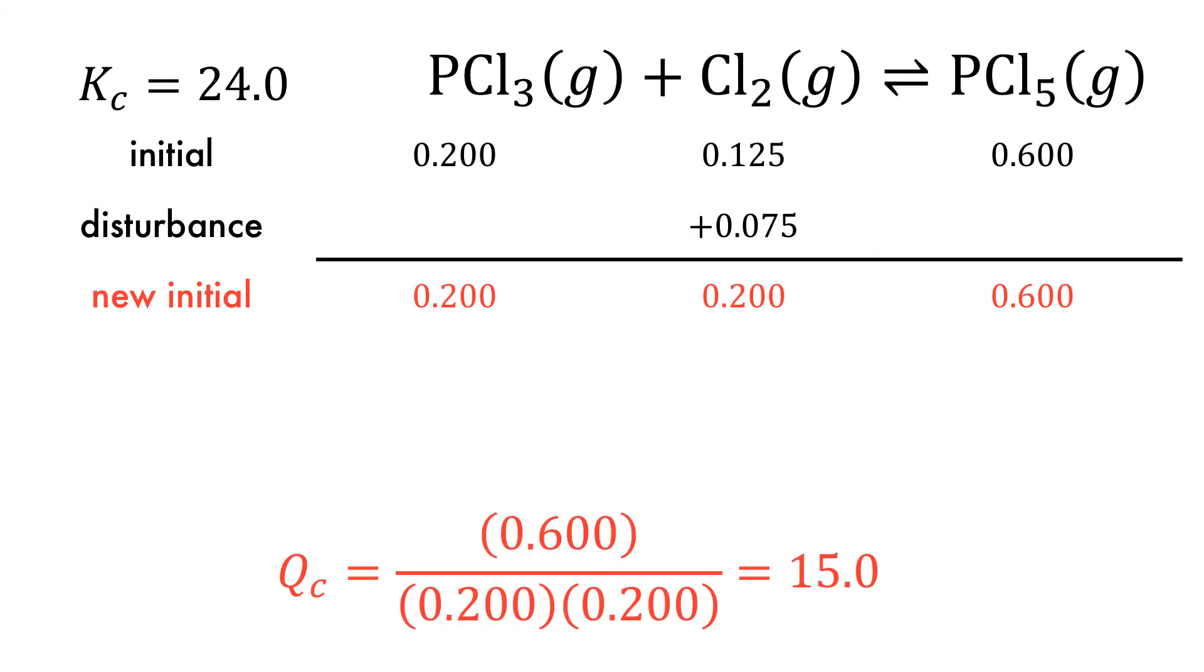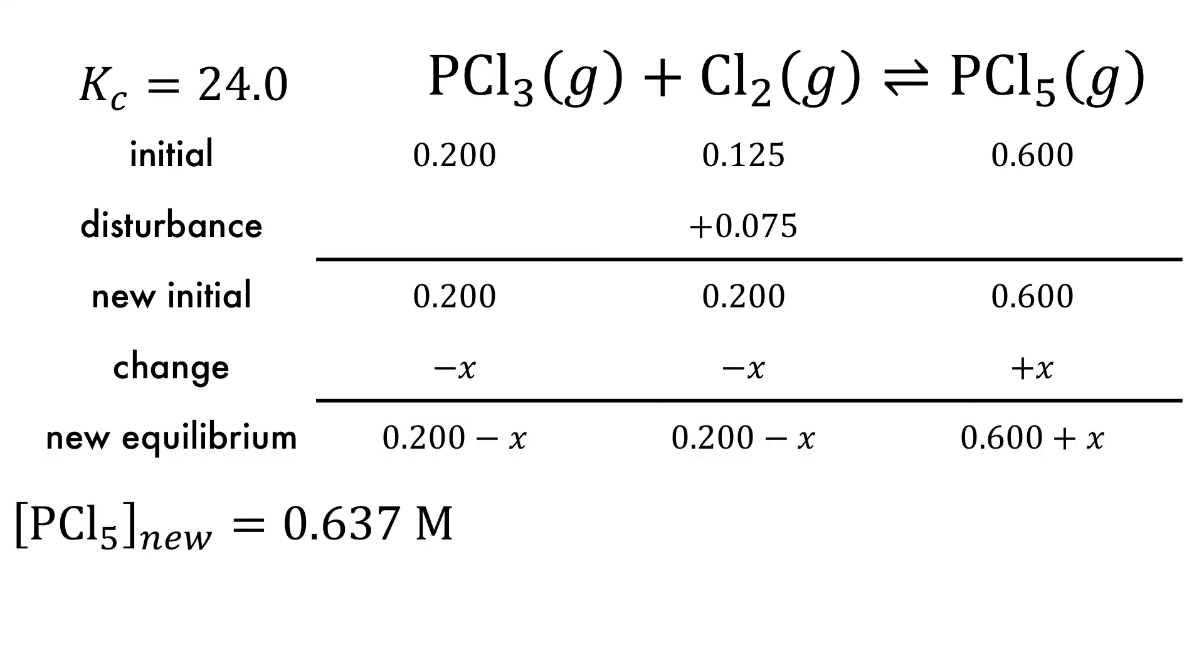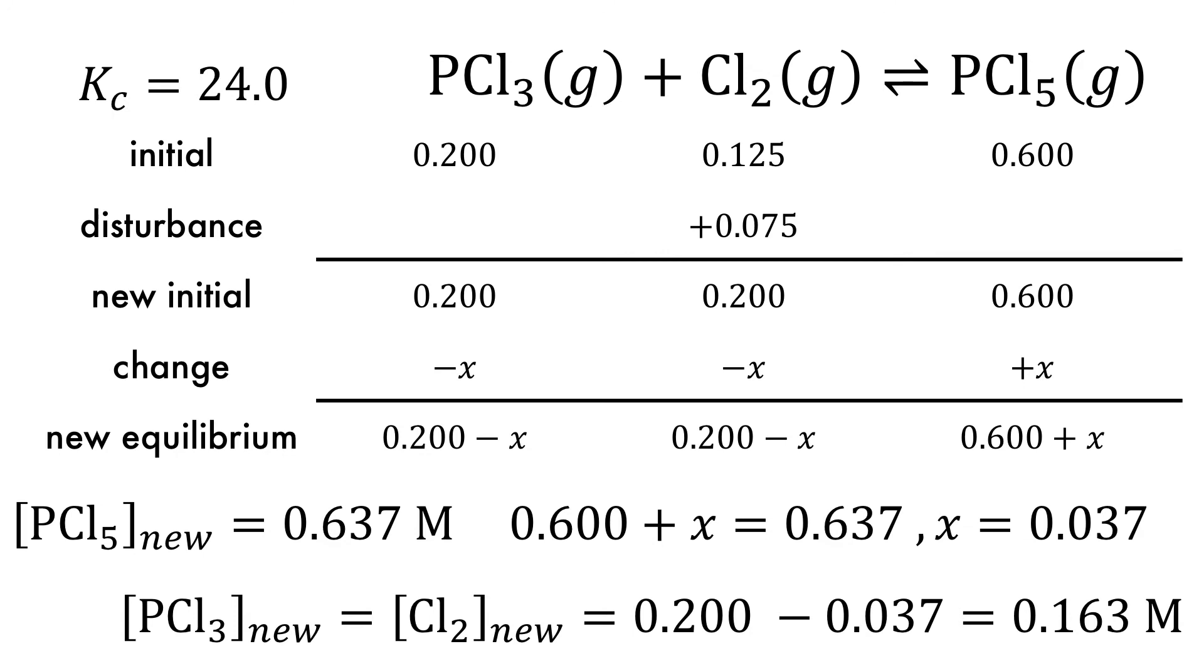Calculating the reaction quotient at this point gives a non-equilibrium value. Calculating the new initial is then changed from the original value of x, giving us a new equilibrium. The new equilibrium concentration of PCl5 is given as 0.637 moles per liter, which allows the value of x to be determined. Plugging this into the change for the reactants gives us new equilibrium concentrations for PCl3 and Cl2 as 0.163 moles per liter respectively.